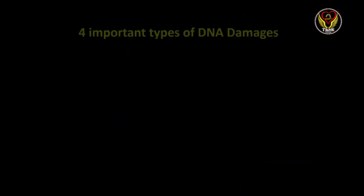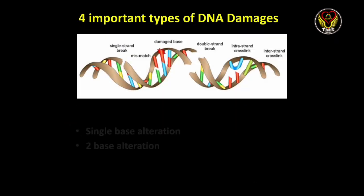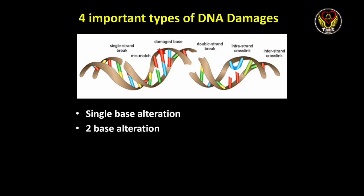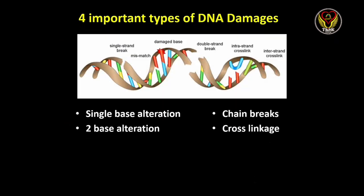In general, DNA damages can be of four important types, which include single base alteration, double base alteration, chain breaks, and cross linkage. From this picture we can easily understand each type of DNA damage.